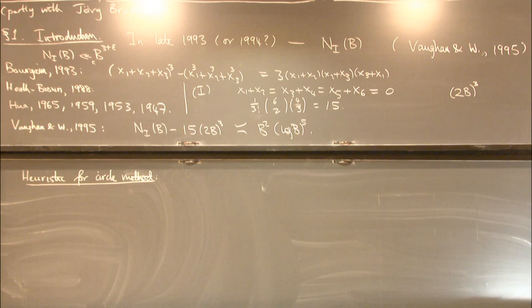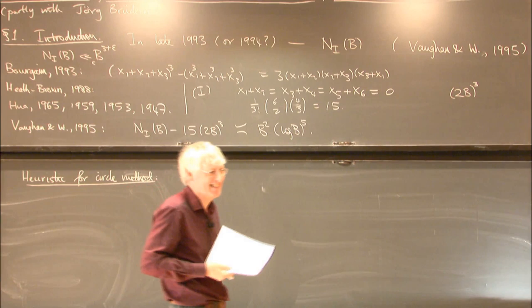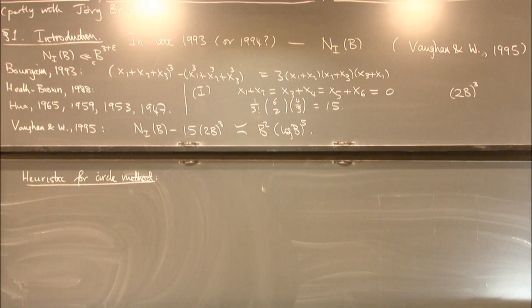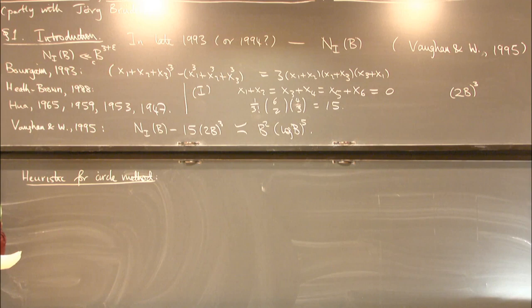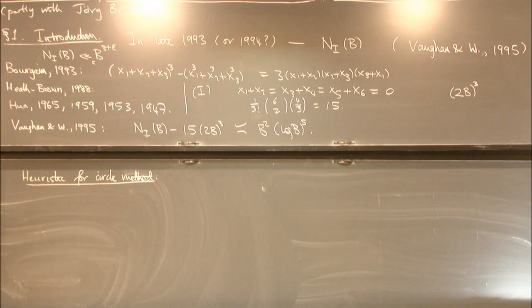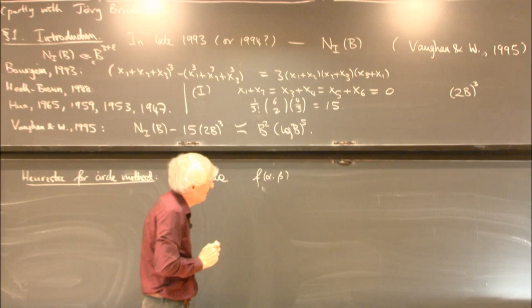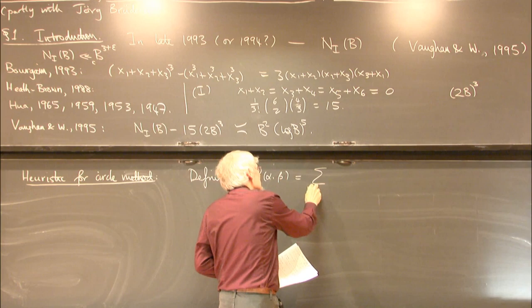Our explanation was by a heuristic for the circle method. Sarnak, Rudnick, and Duke had a paper about Hardy-Littlewood systems formalizing Schmidt's work. Vaughan and I called these 'quasi-Hardy-Littlewood systems,' where applicability was more general and applied to situations with fewer variables. We're going to apply the Hardy-Littlewood method and write down an exponential sum.